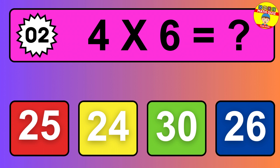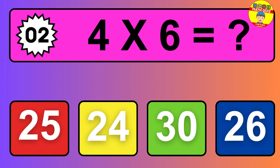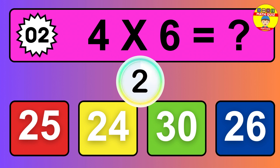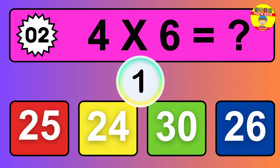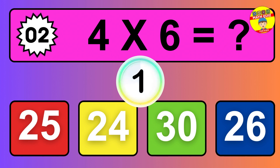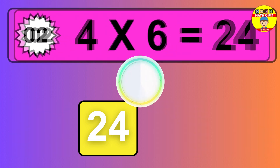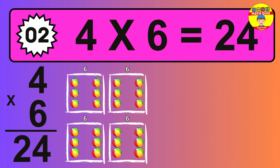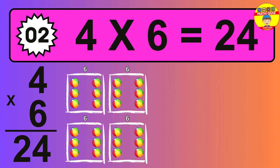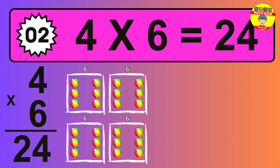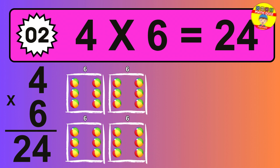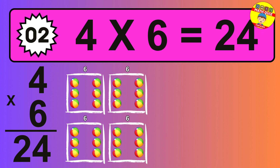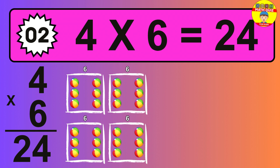Question two. Four times six equals what? So the answer is four times six is 24. To calculate, we have four groups with six balls each one. So how many balls do we have? 24 balls.